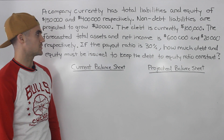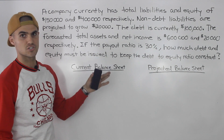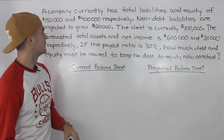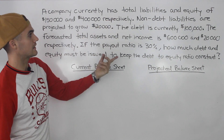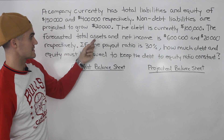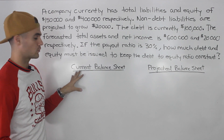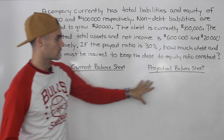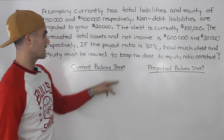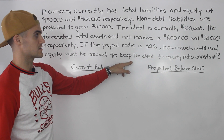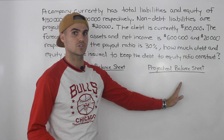The first thing to notice with this question is that there are a lot of balance sheet items mentioned — total liabilities, equity, non-debt liabilities, debt, and forecasted total assets. So we know we're probably going to have to work with a current balance sheet and then a projected balance sheet, and we have to make sure the debt to equity ratio is constant — the same on both.